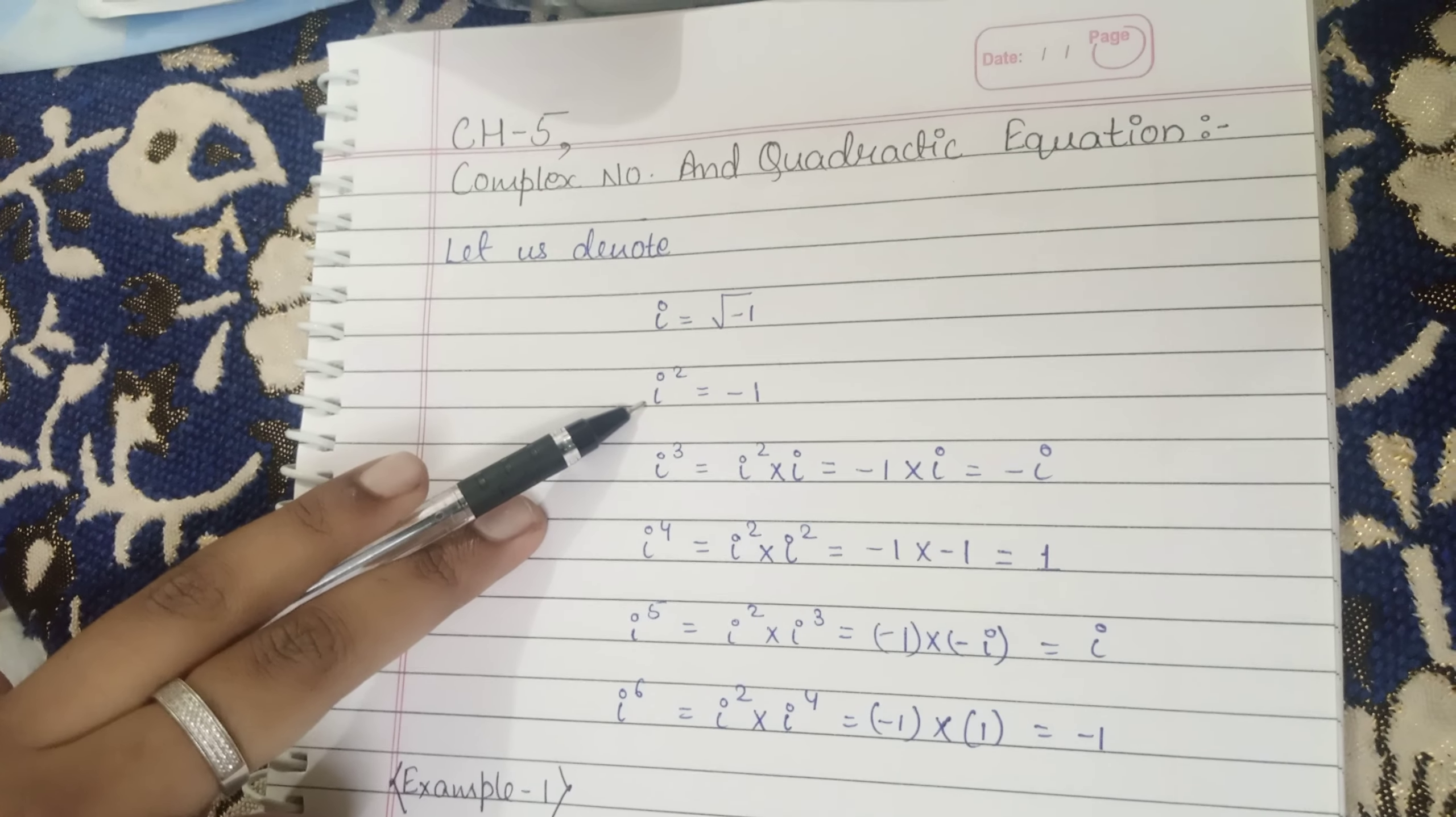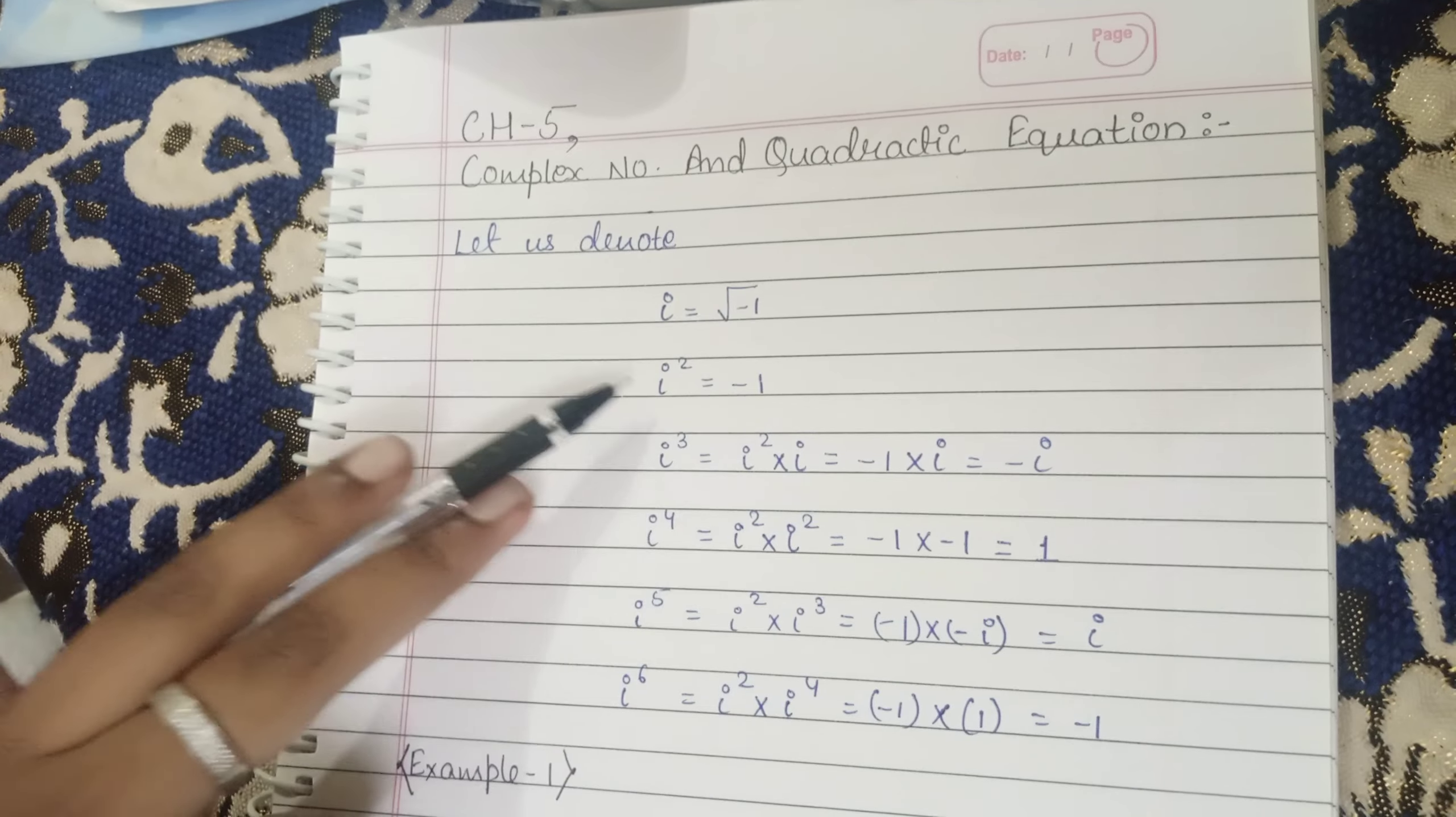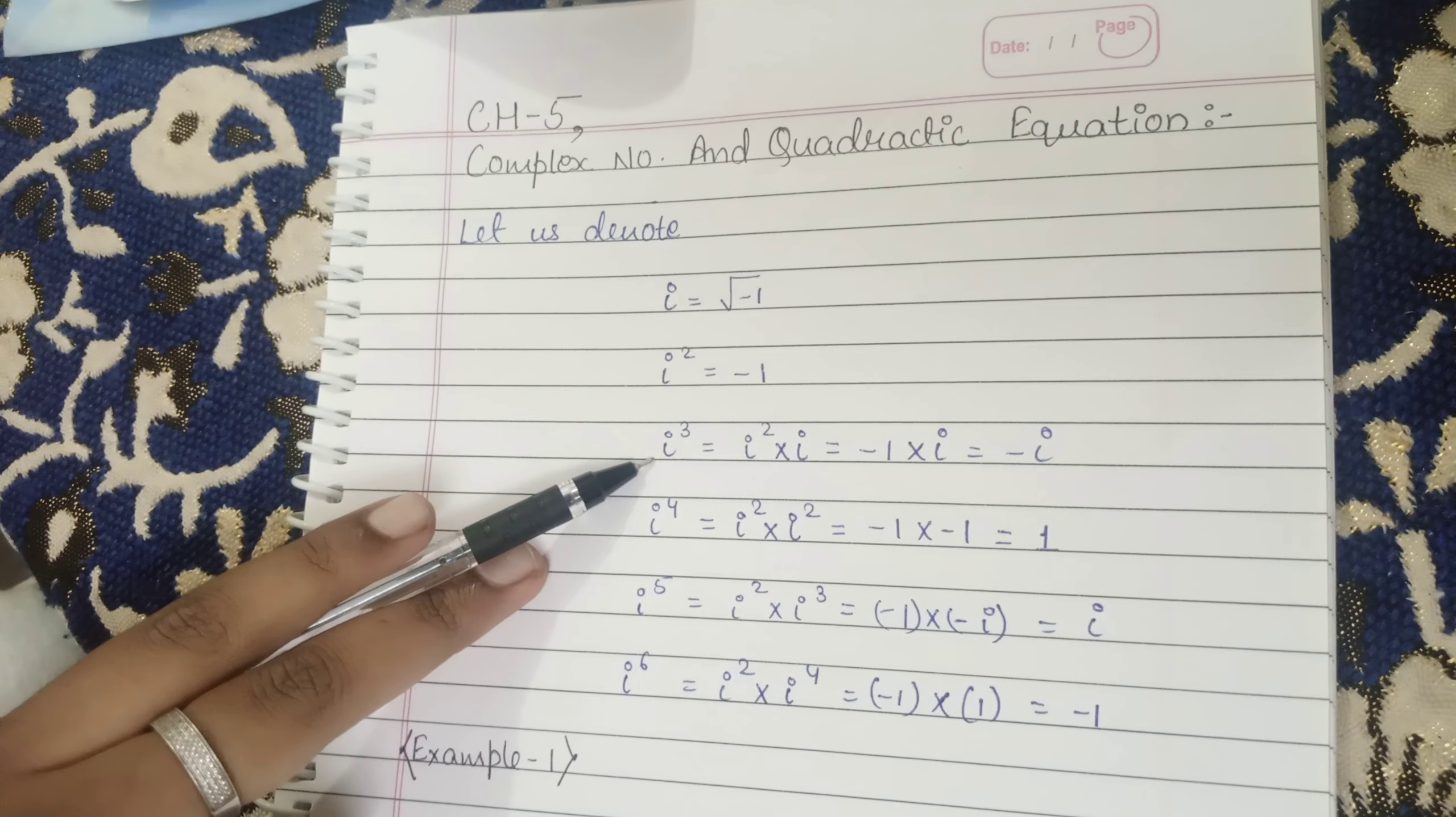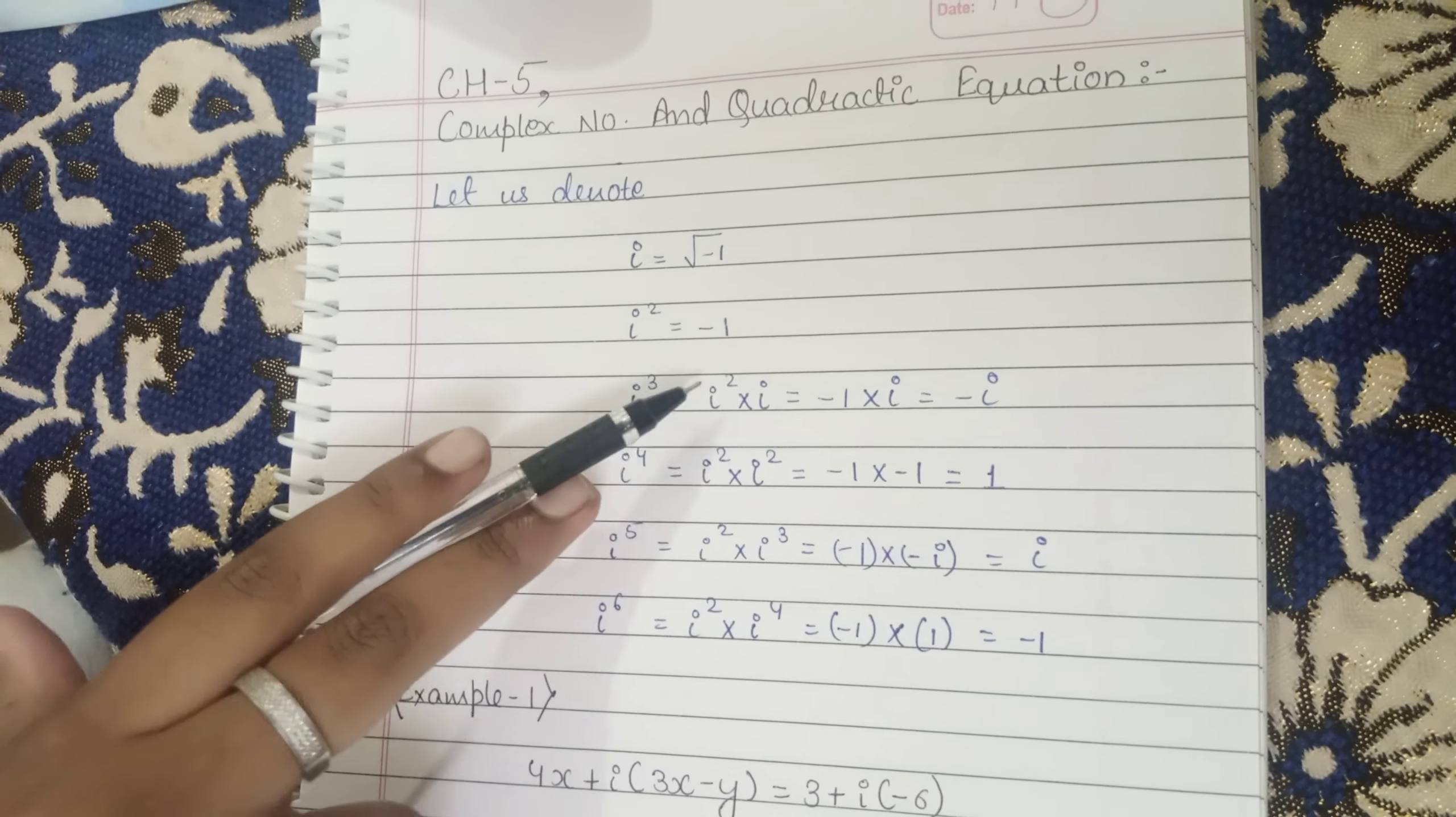i square or iota square equals to minus 1. i cube or iota cube is known as iota square into i.